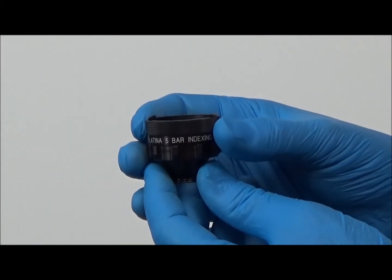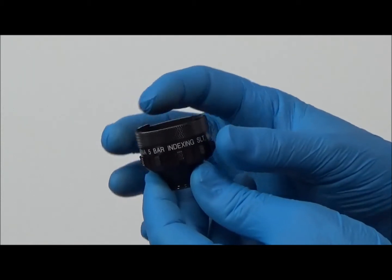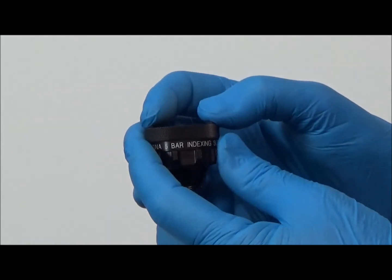To disassemble, press the opposing tabs together and slide off the anterior knurled rim.